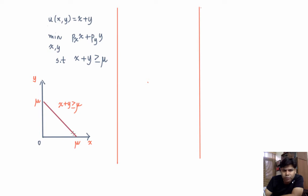So given that the slope of the indifference curve is 1, we are going to divide this problem into three cases. Case 1 is px by py less than 1. Case 2 is px by py equal to 1. Case 3 is px by py greater than 1.